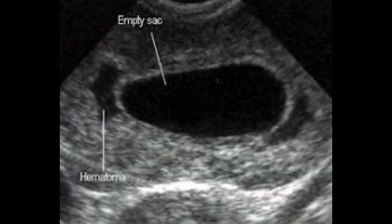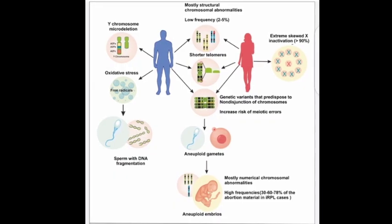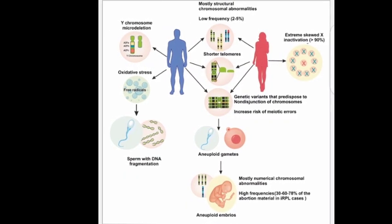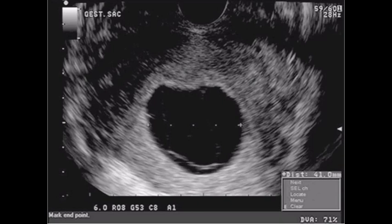What causes early pregnancy loss? About half of early miscarriages happen when the embryo does not develop properly. This often is due to an abnormal number of chromosomes. Most miscarriages happen during the first trimester of pregnancy, which is about the first 13 weeks.